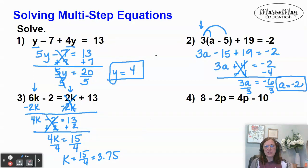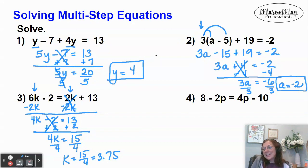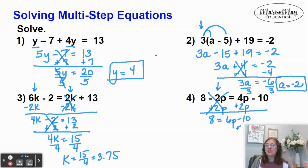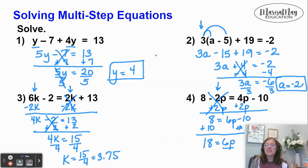Let's do one more like that where you've got to move the variables to both sides. Look at number 4. This one, I can either move the minus 2p or the positive 4p. I kind of like to keep the variables positive, so I'm going to move this minus 2p by adding 2p to both sides. Notice I write it underneath its like term. My opposites cancel, giving me 8 equals 6p minus 10. There's my two-step equation. We do the opposite of minus 10, which is to add 10, and that gives me 18 equals 6p. Then we do the opposite of multiplying by 6, which is to divide by 6, and p equals 3.